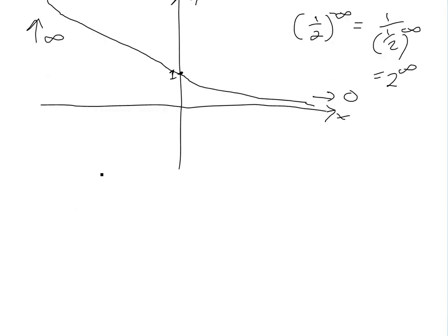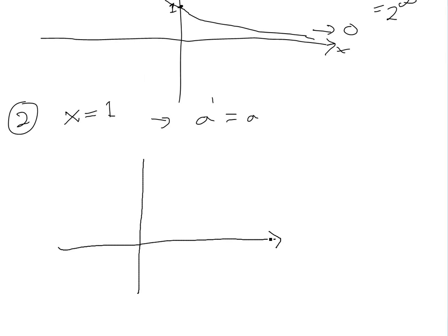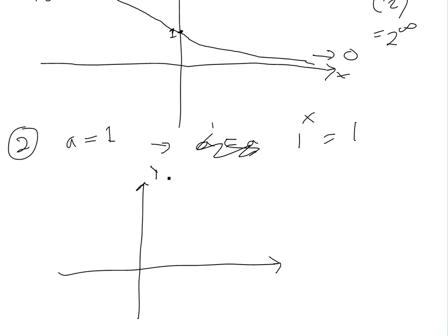Case two is when a equals 1. Then you have 1 to the x, which equals 1 for all x. So if you plot this with x and y axes, it's just going to be a horizontal line at y equals 1.